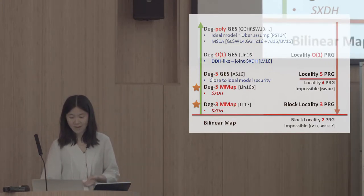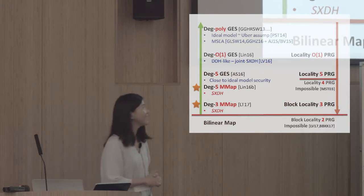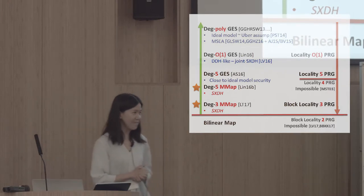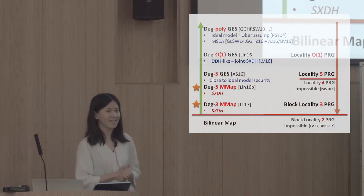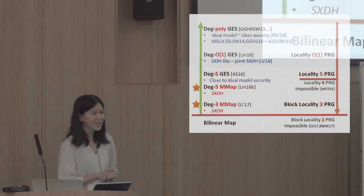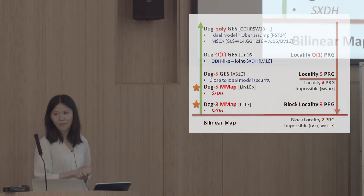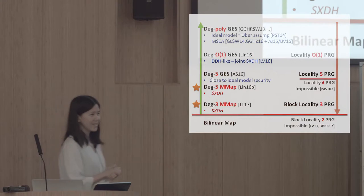At this point, you'll probably be wondering — indeed, there is another wall: blockwise locality-2 PRGs do not exist. As such, we are standing right now one degree away from bilinear maps, for which we do have secure instantiations.